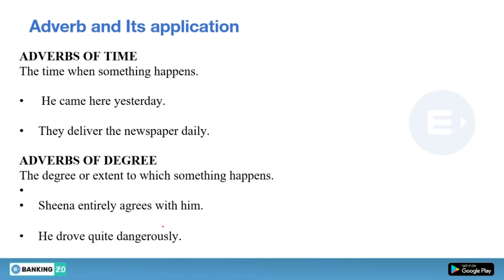Next is adverbs of time — the time when something happens. It gives you the answer of 'when.' Example: He came here yesterday. When did he come? Yesterday. Words like yesterday, tomorrow, today are adverbs of time. Another example: They deliver the newspaper daily — daily gives you the answer of when, so daily is an adverb of time.